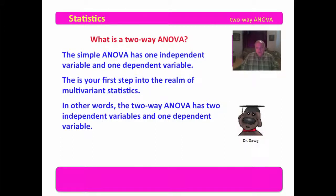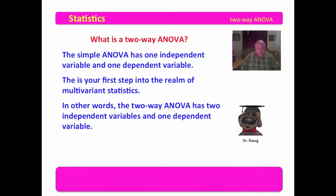Before we continue, let's take a moment to talk about multivariate statistics. How many things do you know in life that are only contingent upon one variable? Not very many. Most things are contingent upon many independent variables. The two-way ANOVA is the first step in looking at how you might examine a dependent variable which is driven by two independent variables.